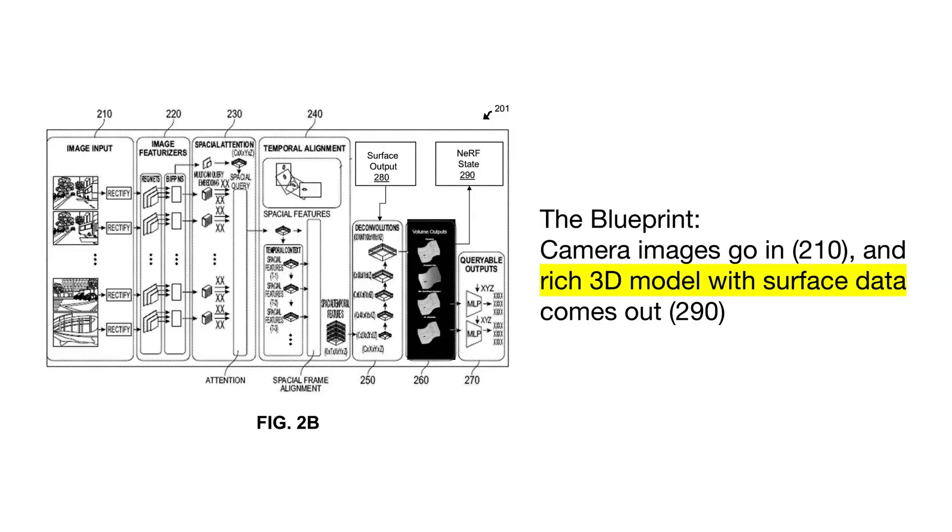So here's the big picture, the blueprint from the patent. I know it looks a little intimidating, but the core idea is actually pretty simple. Over on the left, you've got the raw camera images going in—that's your input. All that stuff in the middle? That's the AI brain, the neural network, doing its thing. And what comes out on the other side is that beautiful, rich 3D model we were just talking about. It's basically a machine for turning flat pictures into a deep 3D understanding of the world.